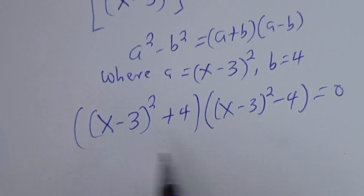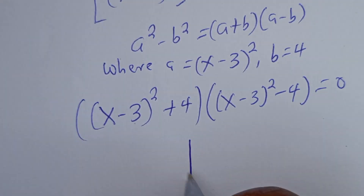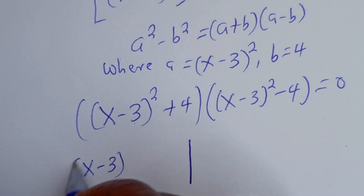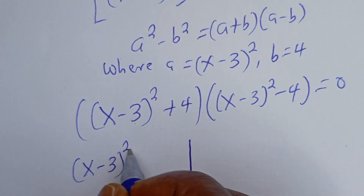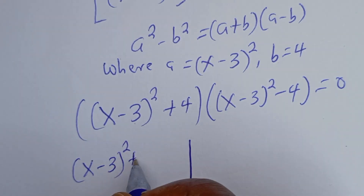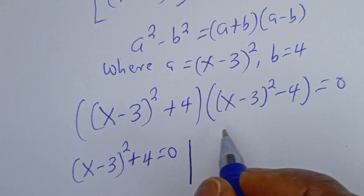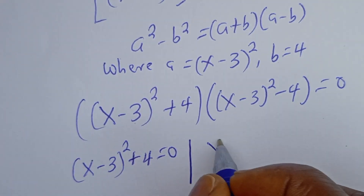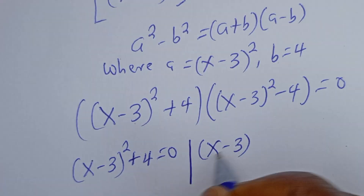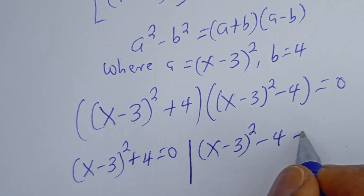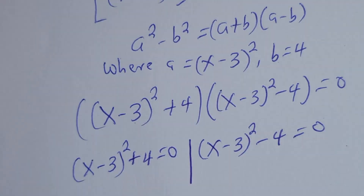There are two cases here. The first case is S minus 3 squared plus 4 equal to 0, and the second case is S minus 3 squared minus 4 equal to 0.